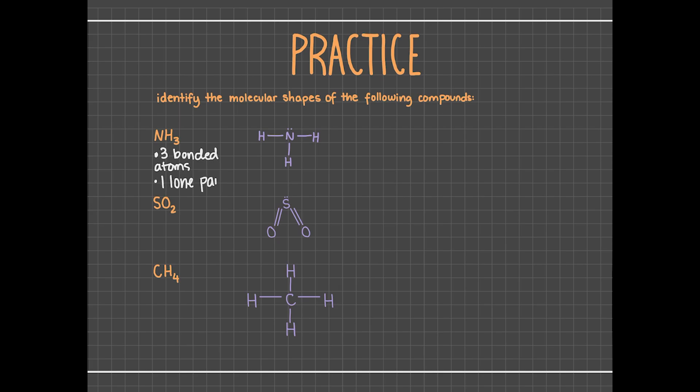Okay, so for NH3, we can see that there are three hydrogens bonded to the nitrogen, and that the nitrogen only has one lone pair. Thus, we can identify ammonia as a trigonal pyramidal molecule, because it has three atoms bonded to the central atom and one lone pair on the central atom.